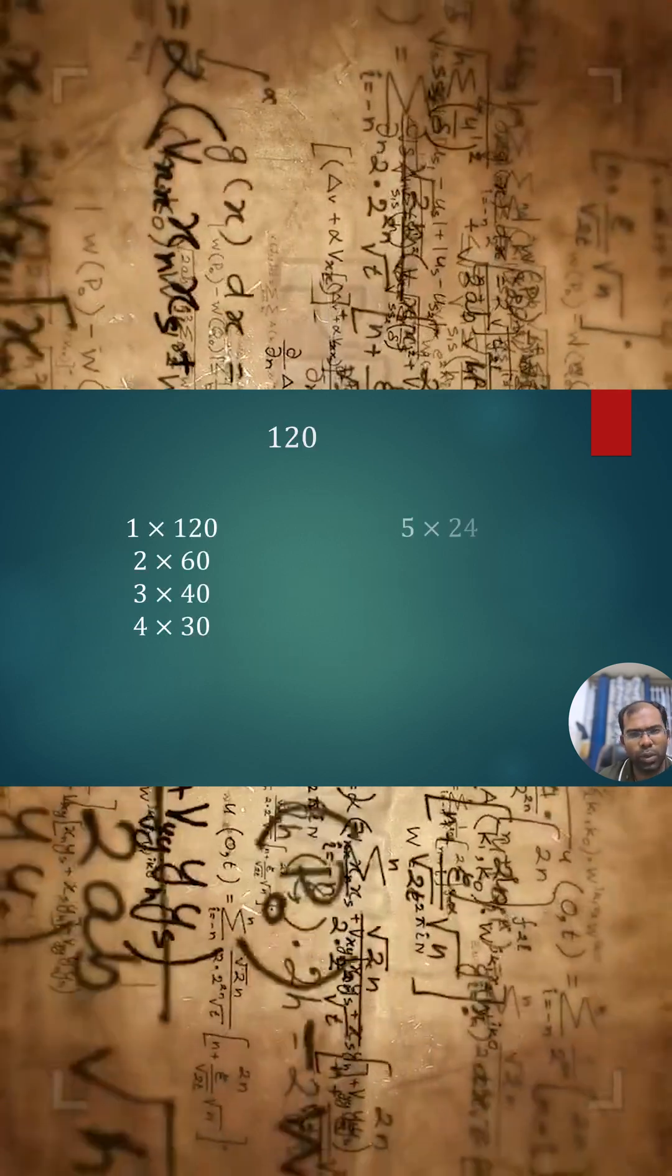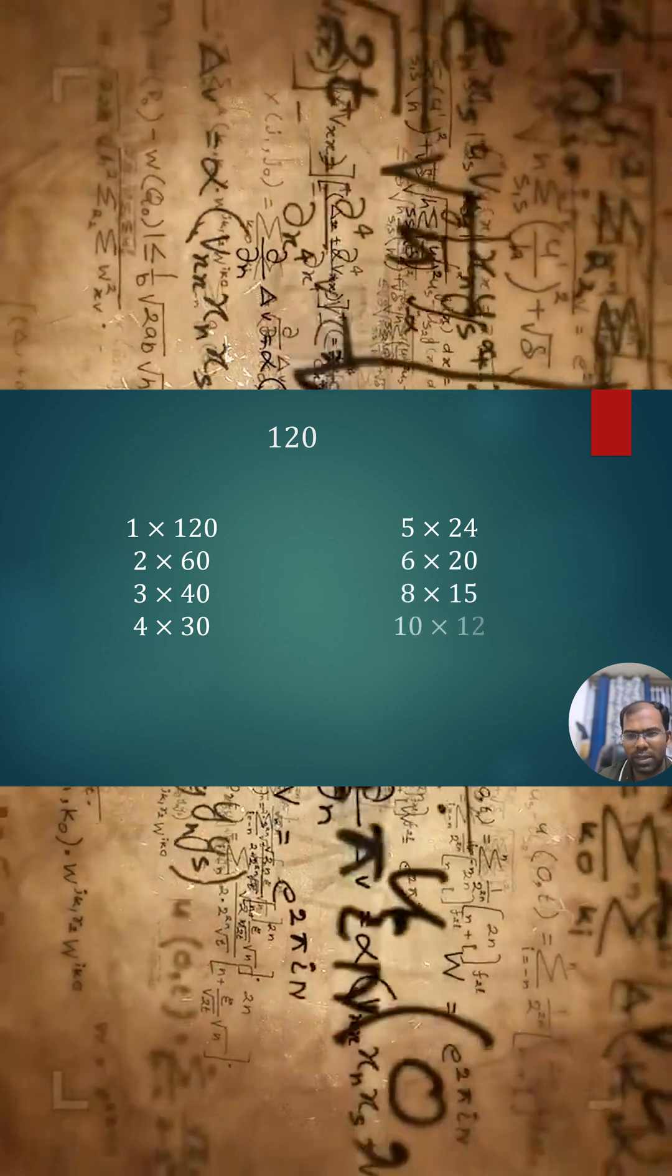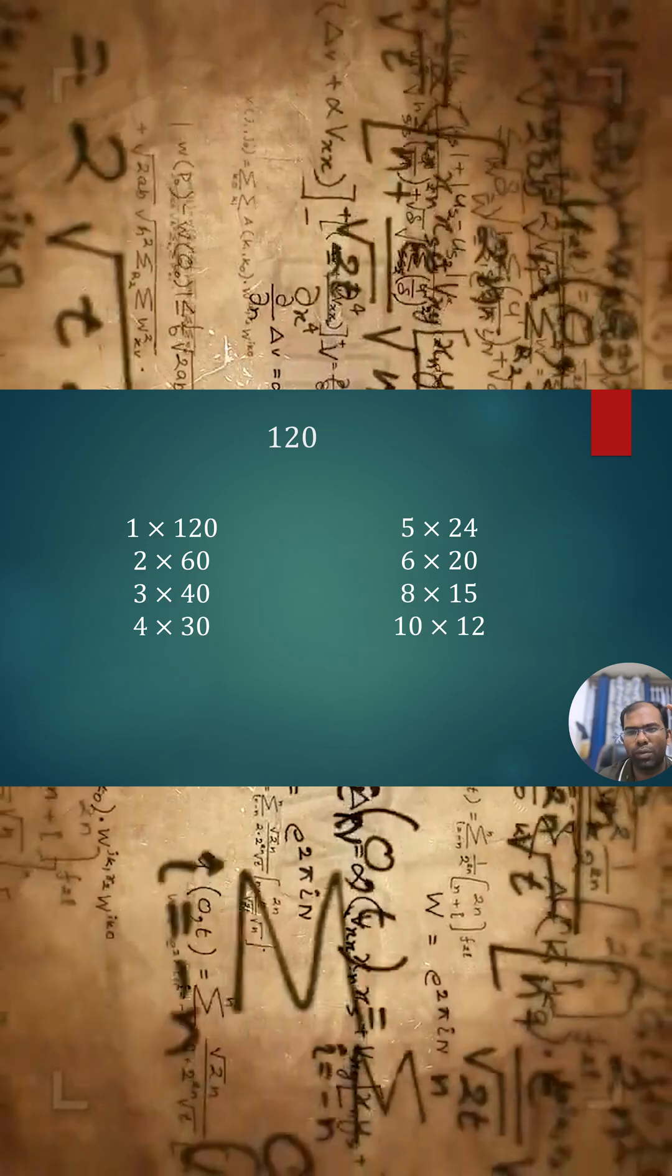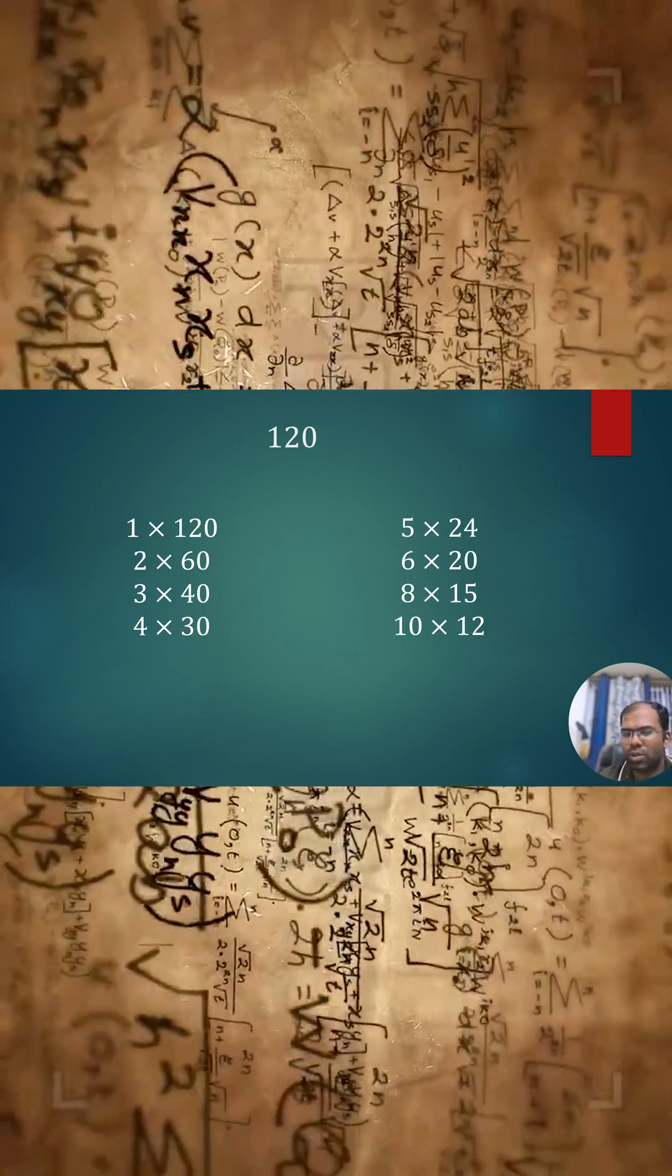120 can be expressed as 1 × 120, 2 × 60, 3 × 40, 4 × 30, 5 × 24, 6 × 20, 8 × 15, and 10 × 12. These are 8 pairs, so you have 16 divisors.